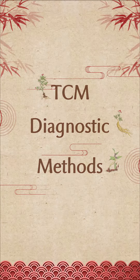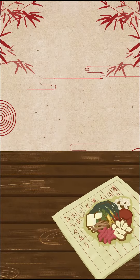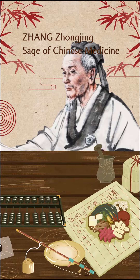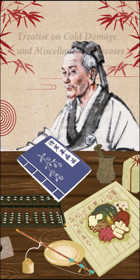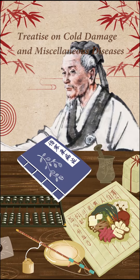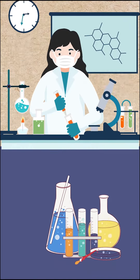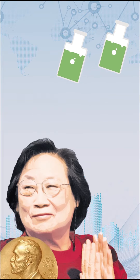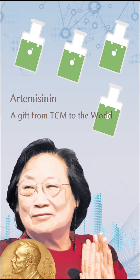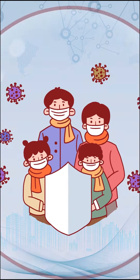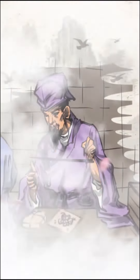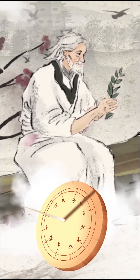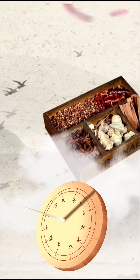In the 2nd century, Zhang Zhongjing wrote this classic of traditional Chinese medicine when epidemic infectious illnesses were prevalent. Decades ago, inspired by TCM, Tu Youyou managed to extract artemisinin, which inhibits the malaria parasite, saving millions of lives. For thousands of years, traditional Chinese medicine has been an essential part of the healthcare system in China.